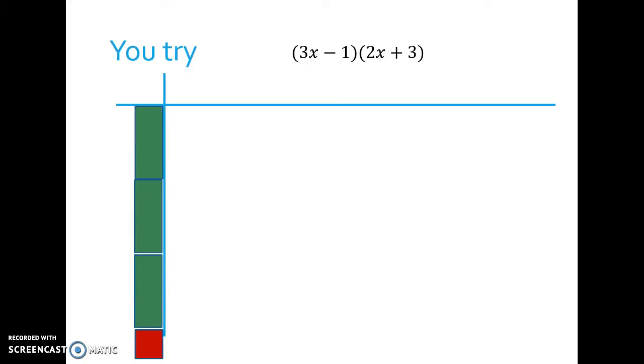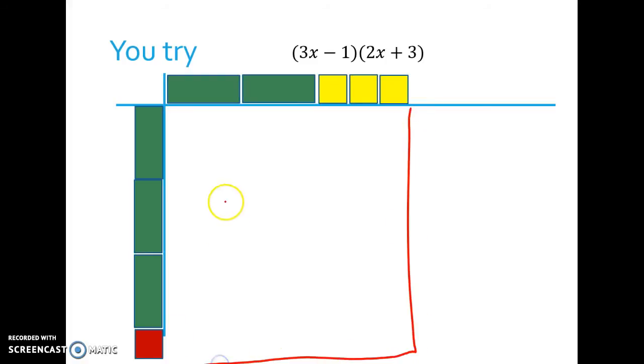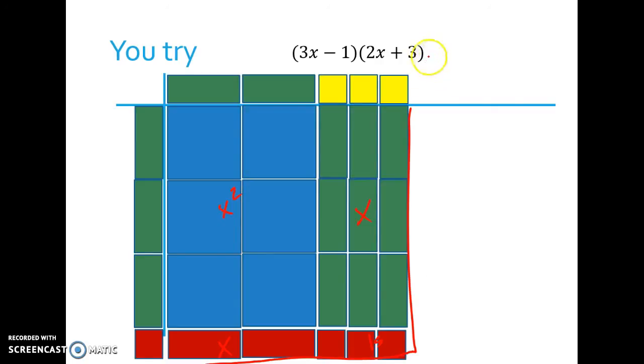So here's 3x minus 1. Notice that I made that tile red because it was negative. And here's 2x plus 3. And then if I'm filling in this area, I'm going to try to have my x squared blocks up here, my 1s blocks down here, and then I'll have x's here and here. So what that looks like is it looks like I have 6x squareds, and I have 9x minus 2x, so plus 7x, and then minus 3 because those are red tiles. So that's using the area and the blocks to make the product of two polynomials.